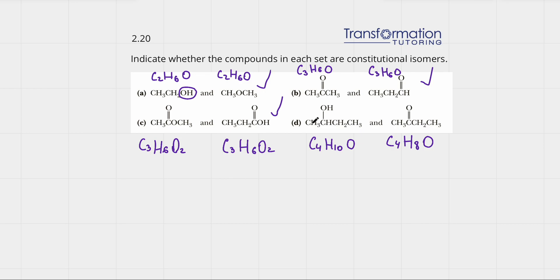Let's double check the hydrogen count. On the left: three plus one is four, plus two is six, plus four is ten hydrogens. On the right: three plus two is five, plus three is eight hydrogens. Our formulas do not match, and the definition of constitutional isomers requires molecules to have the same molecular formula but different structures. Since these two molecules have a different number of hydrogens, they cannot be constitutional isomers.